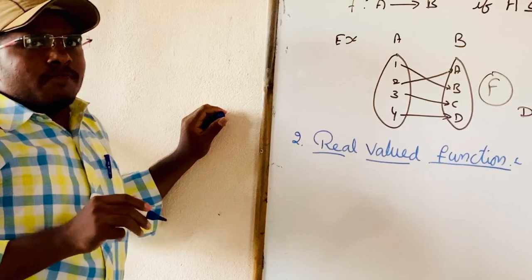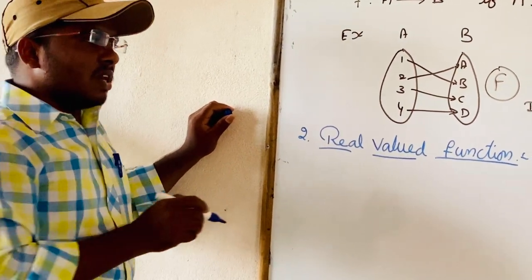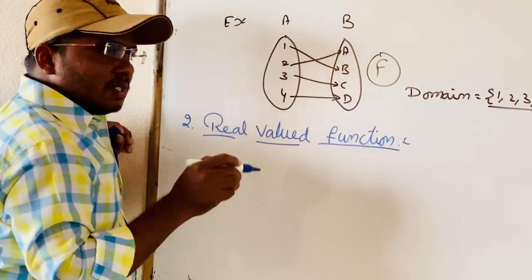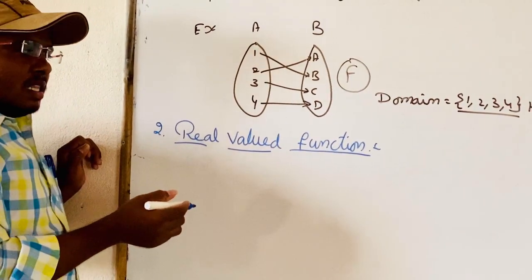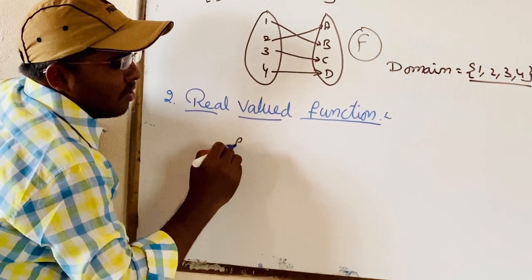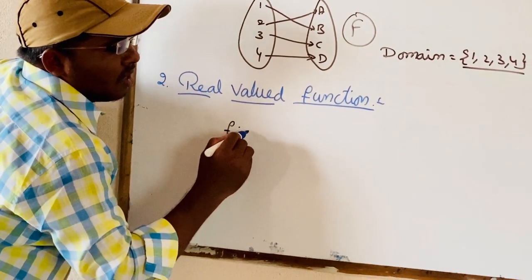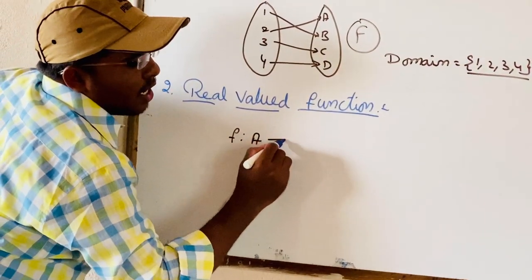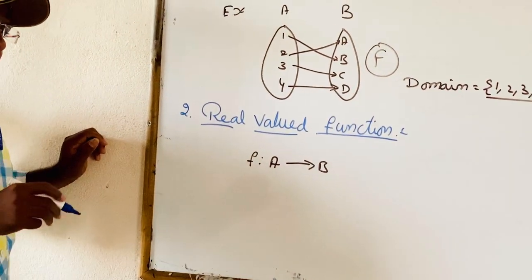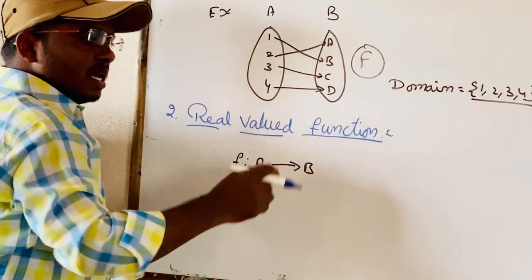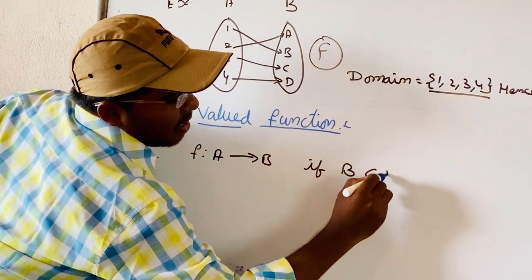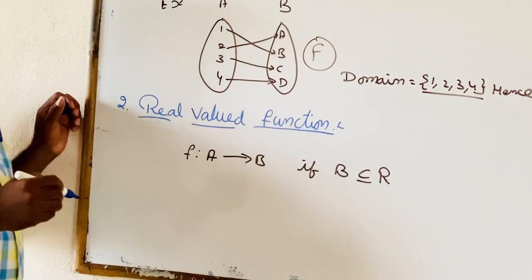Next one is real value function. If the range of the function is a subset of real numbers, then it is called a real value function. A function F1 mapping A to B is a real value function if B is a subset or equal to R.